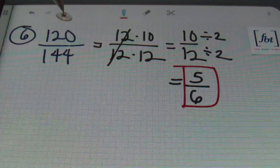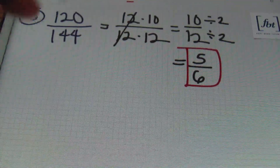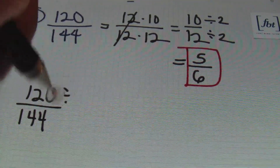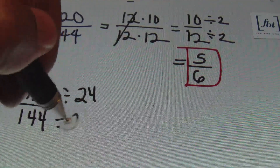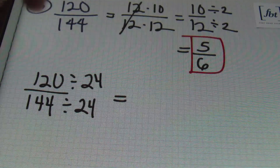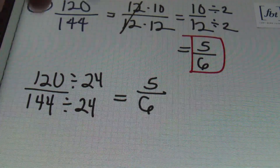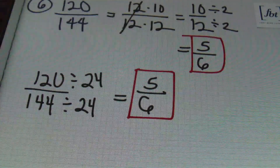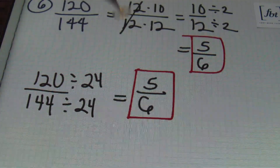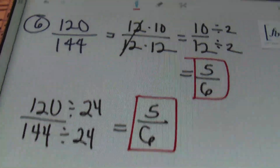Since we divided by 12 first and then by 2, that means both numbers were divisible by 24. So you could have started with 120 over 144 and recognized that the largest factor is 24: 24 goes into 120 five times, and 24 goes into 144 six times, giving the same answer. Always ensure the numerator and denominator do not have any common factors other than one. The final simplified answer is five sixths.